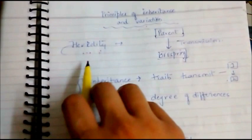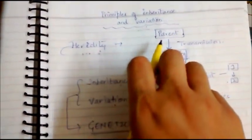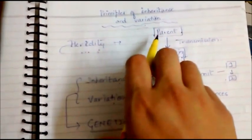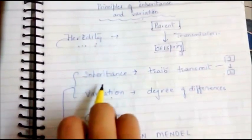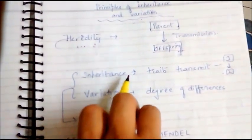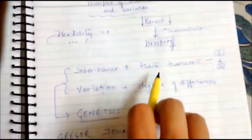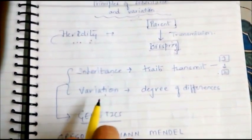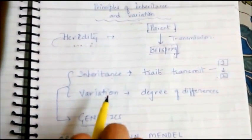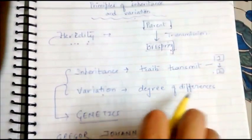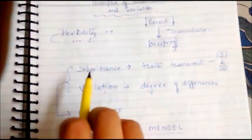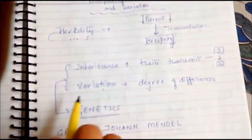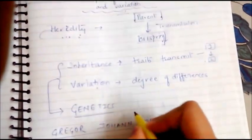Heredity is the transfer of traits from parent to offspring. It involves inheritance, which brings similarity between parents and offspring, but also involves variation, due to which we are similar to our parents but not identical. The study of inheritance and variation is called genetics.